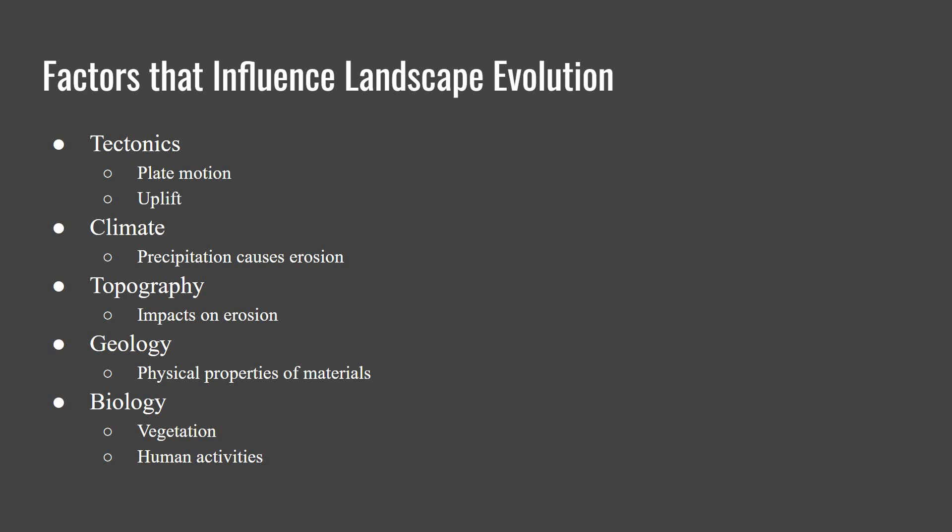Second is climate, both in terms of temperature and precipitation. Precipitation can speed up erosion. Temperature and precipitation influence what sort of vegetation is in a certain area, and also the type of weathering you get in a certain area.